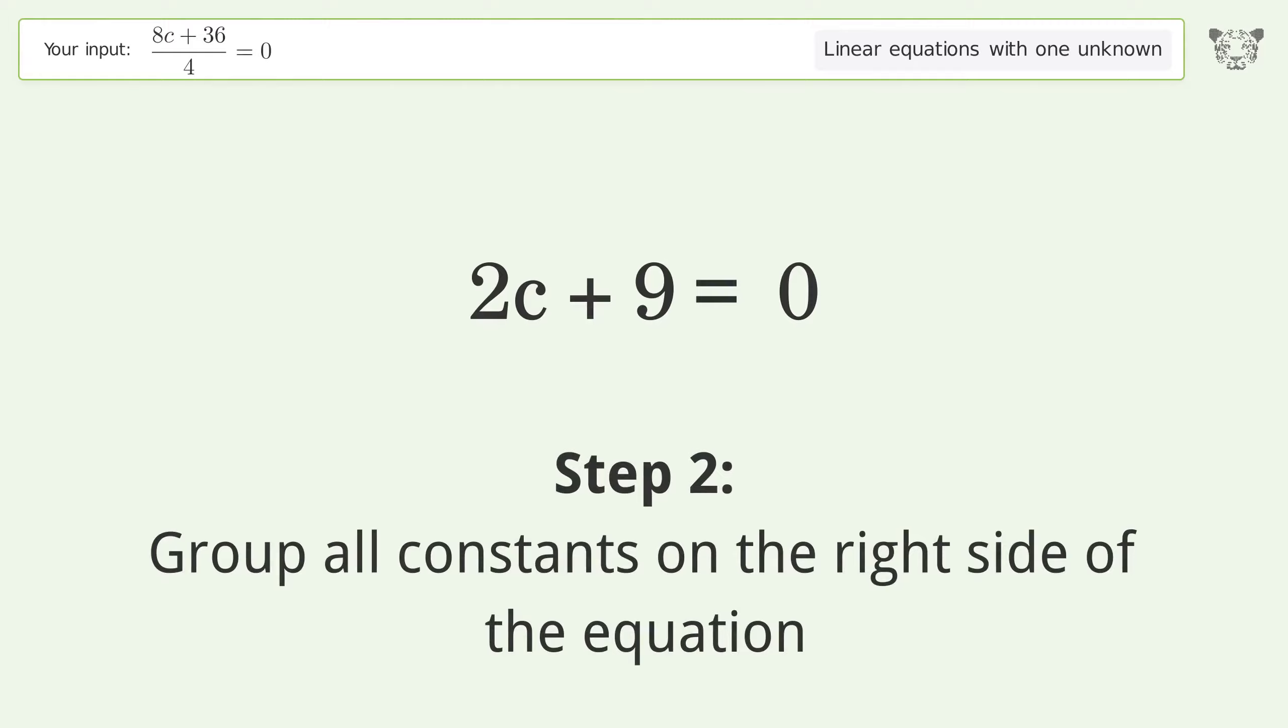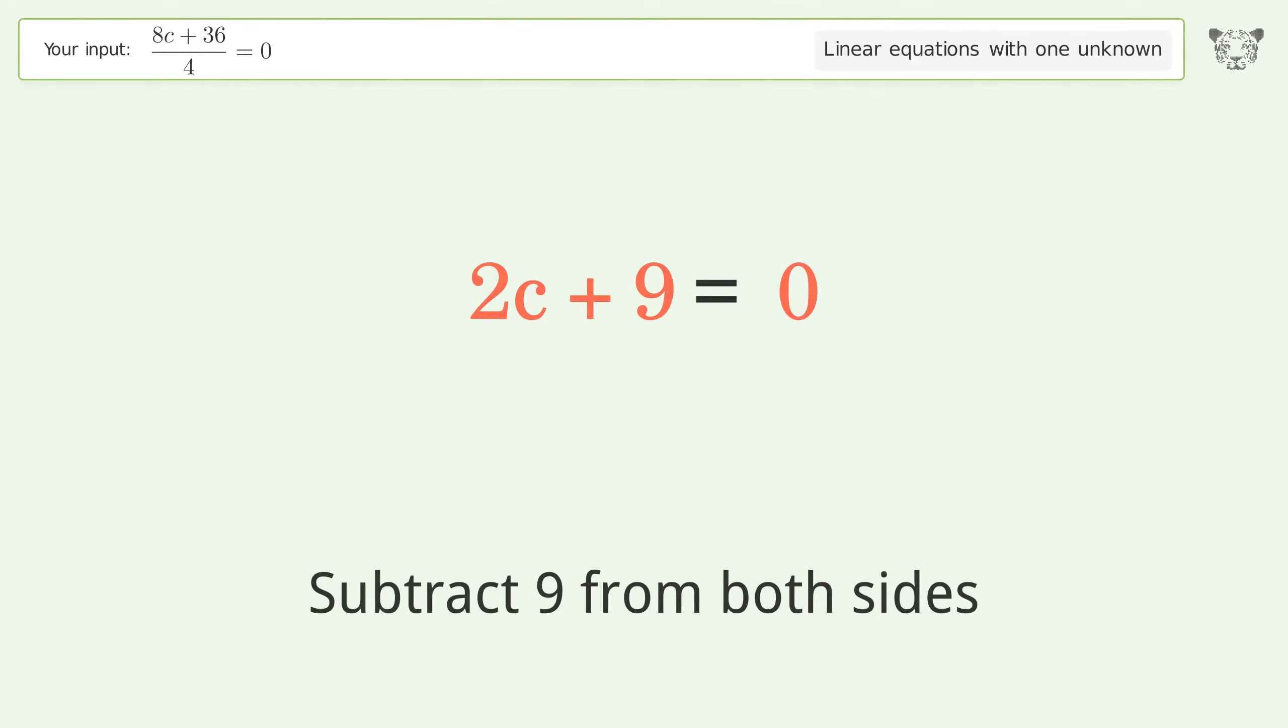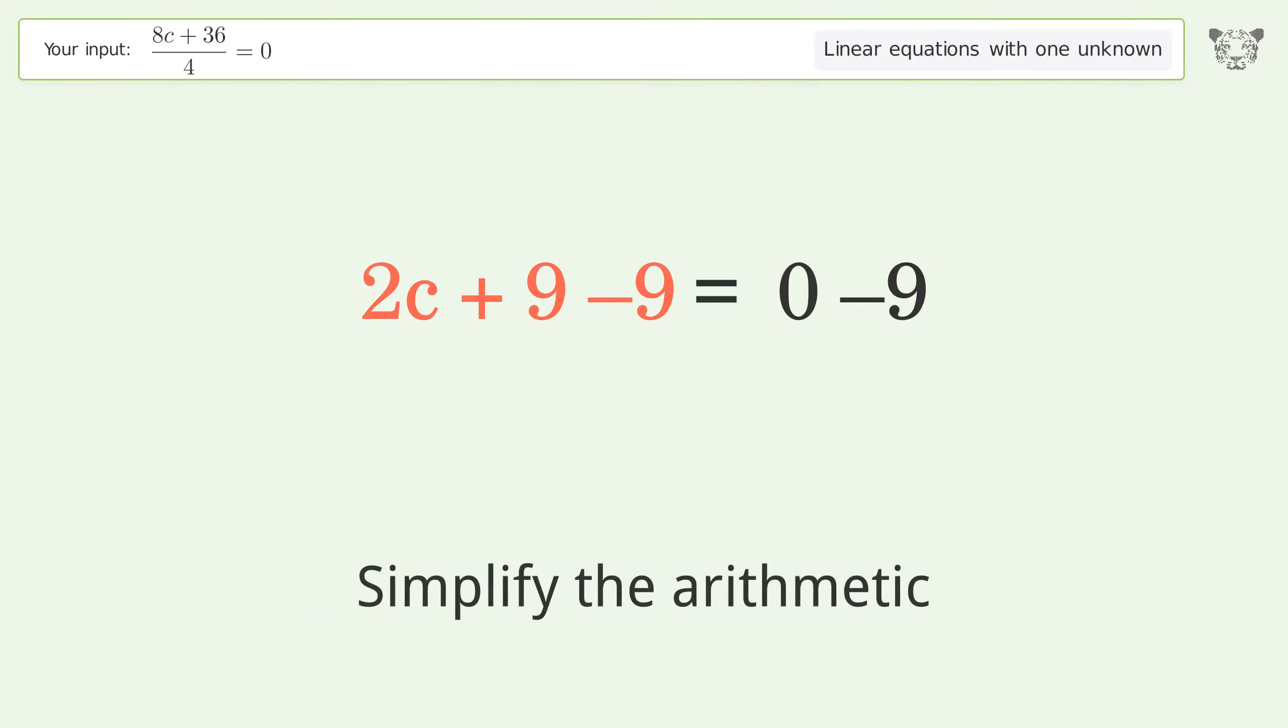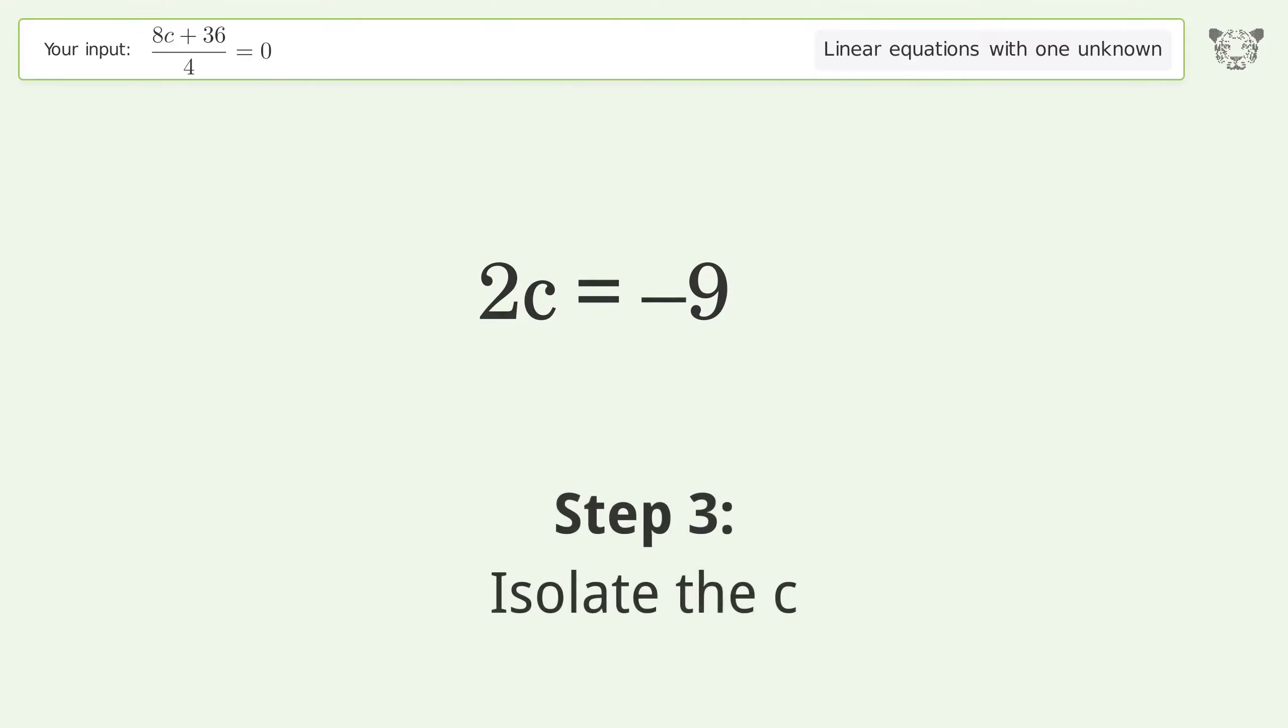Group all constants on the right side of the equation. Subtract 9 from both sides. Simplify the arithmetic. Isolate the c. Divide both sides by 2. Simplify the fraction.